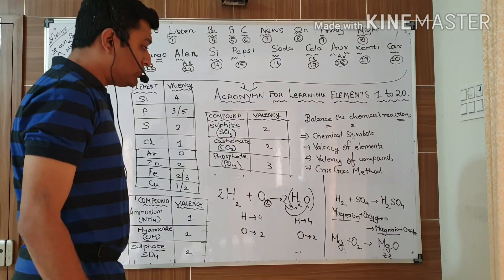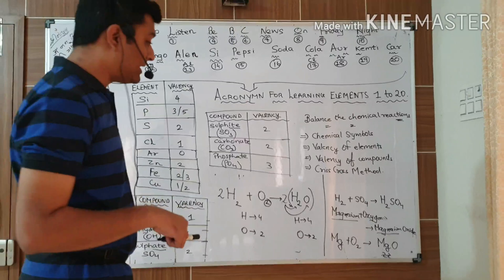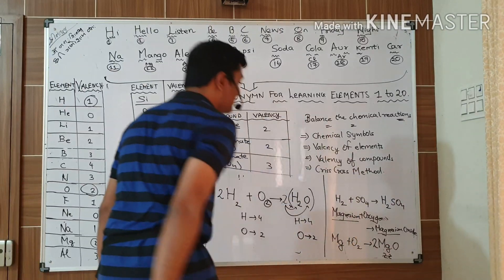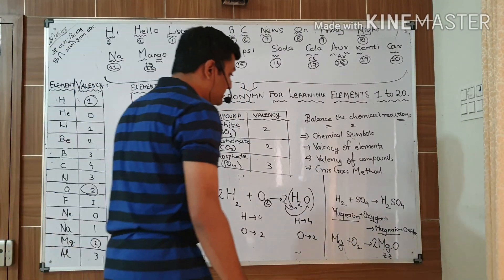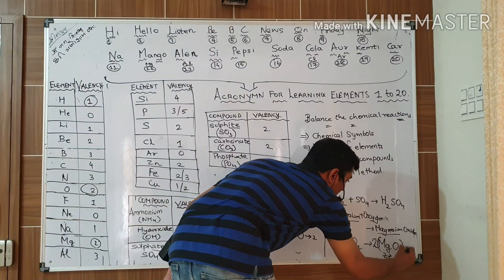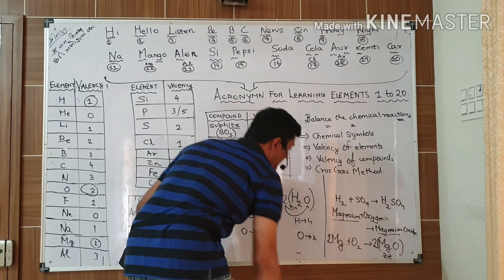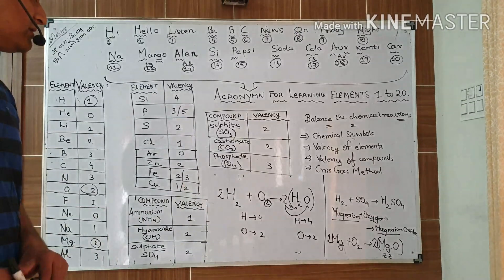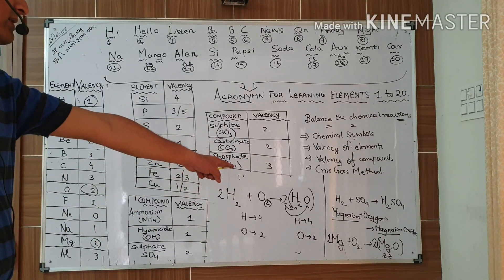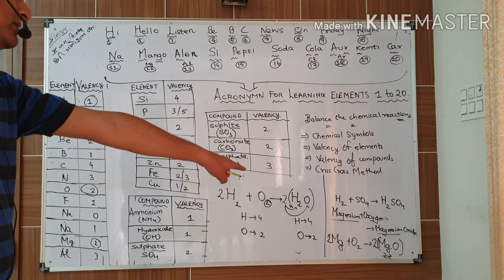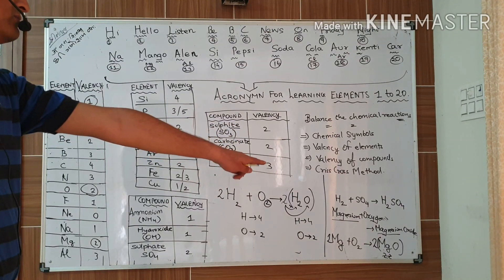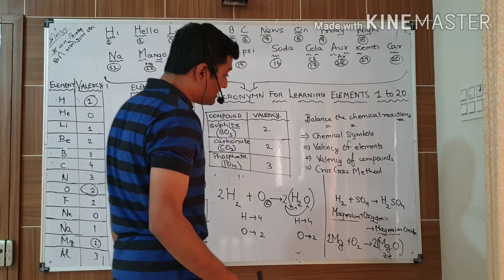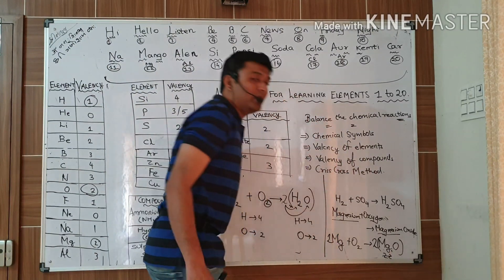Here I am seeing that 2 atoms of oxygen are in the reactant but only 1 atom of oxygen is in the product. So I will place 2 coefficient over here. Now oxygen becomes 2 and 2. But what about magnesium? In the product side magnesium is 2, but in reactant side magnesium is only 1. So I will place 2 over here: 2Mg plus O2 gives 2MgO.